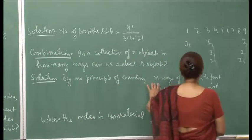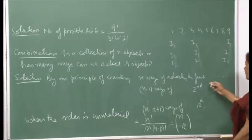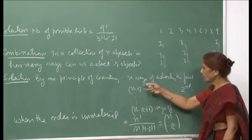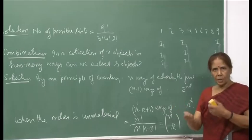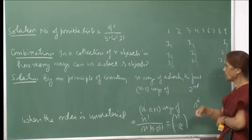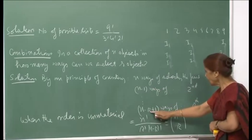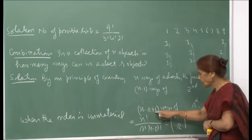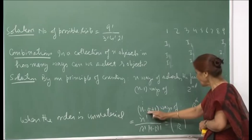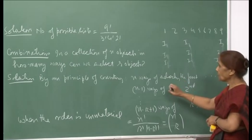By our principle of counting: for the first object selected there are n possible ways, then n−1 ways for the second, and so on, until for the r-th object you are left with n−r+1 choices, since r−1 objects have already been selected.